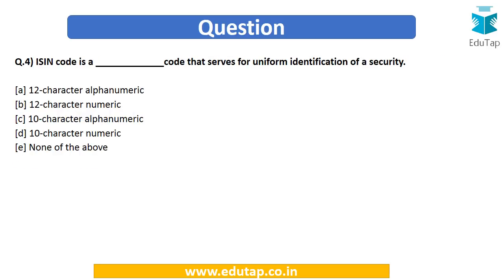Now for the next question: ISIN code is a blank code that serves for uniform identification of a security. The options are: (A) 12 character alphanumeric, (B) 12 character numeric, (C) 10 character alphanumeric, (D) 10 character numeric, or (E) none of the above. We have to identify what kind of code the ISIN code is and how many digits it contains.